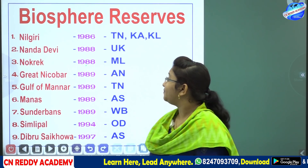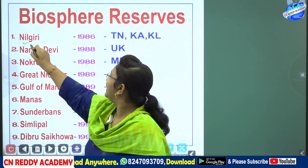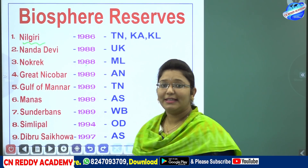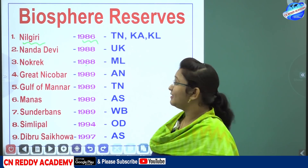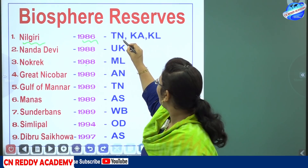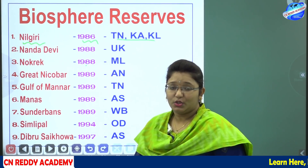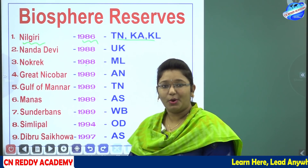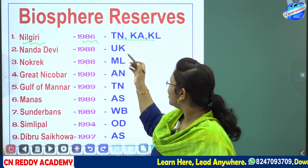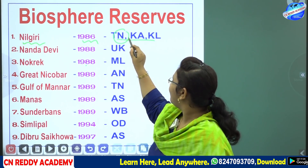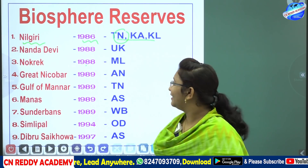The first biosphere reserve is Nilagiri, established in the year 1986. It is located on the borders of Tamil Nadu, Karnataka, and Kerala — in the Nilagiri mountain ranges within the Western Ghats.